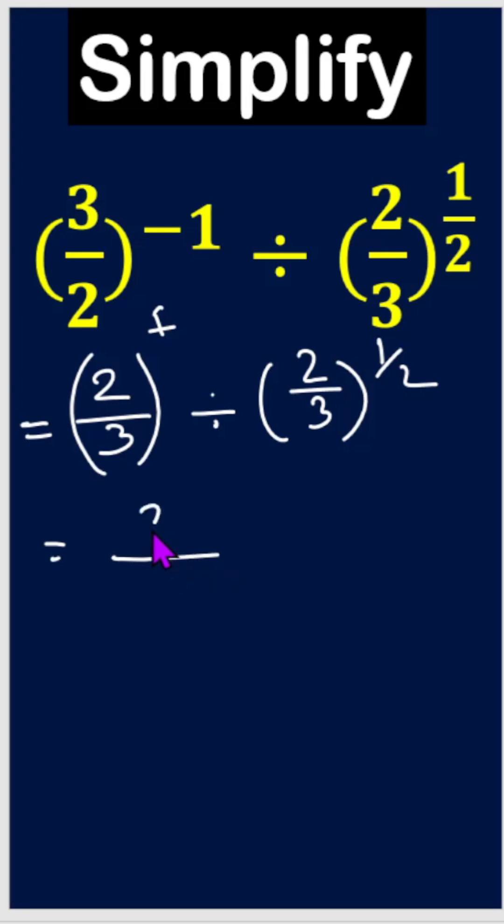We can write like this, 2 by 3 to the power 1 minus 1 by 2.